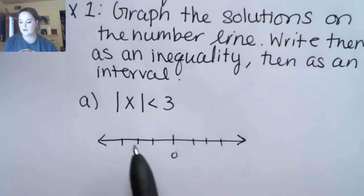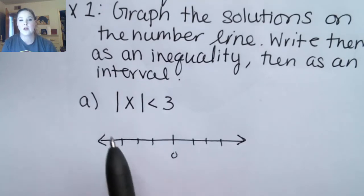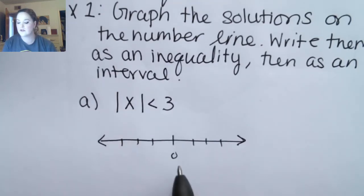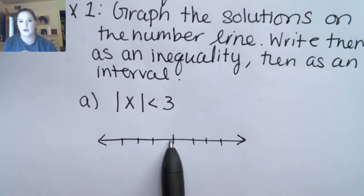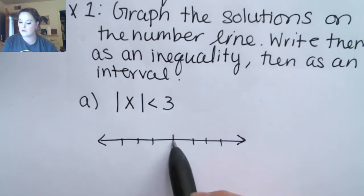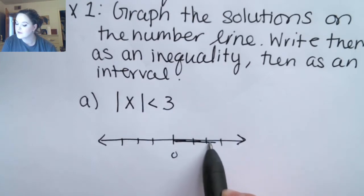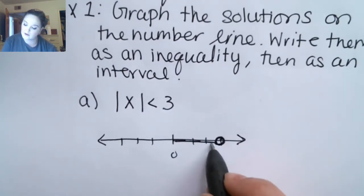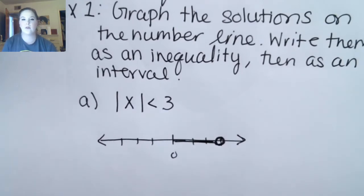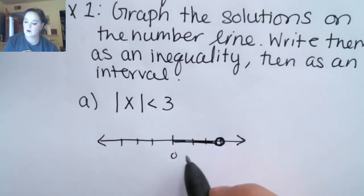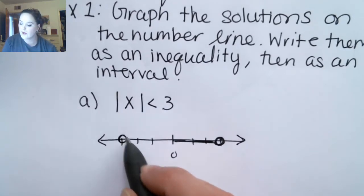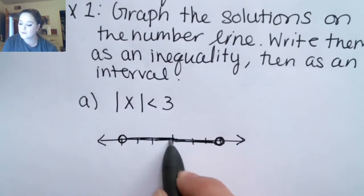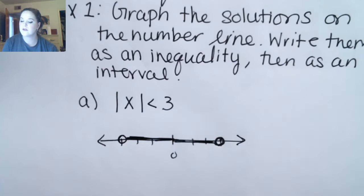So we're looking for numbers whose absolute value is less than three. Remember, the absolute value is the distance between zero and that number. So if we're looking for numbers that are less than three units away from zero, we might go this direction and see that up to three — but not including three — our numbers fulfill that.